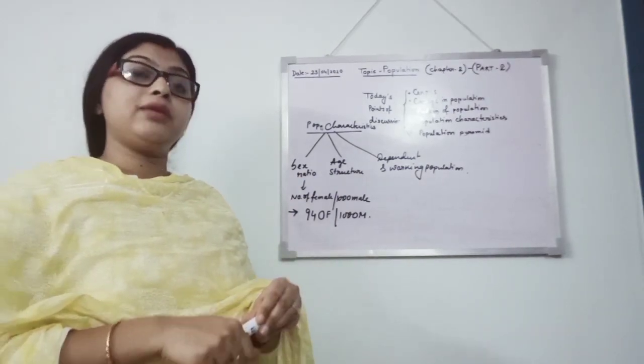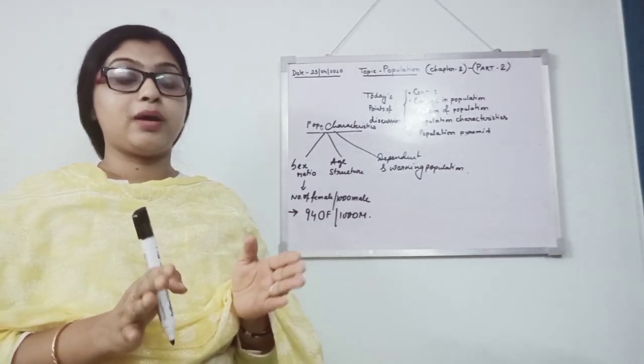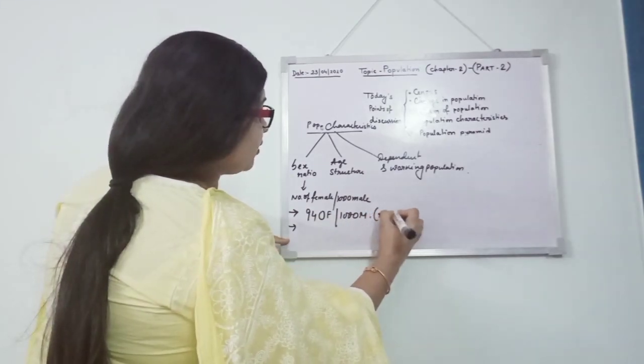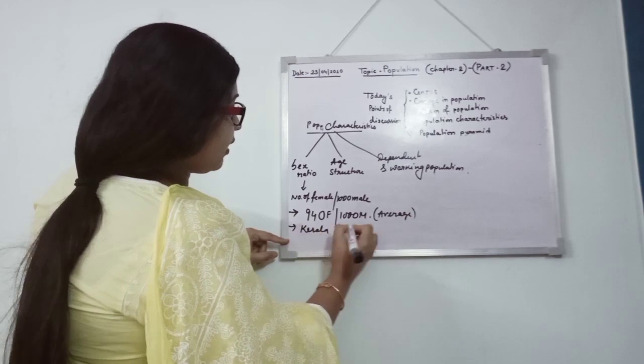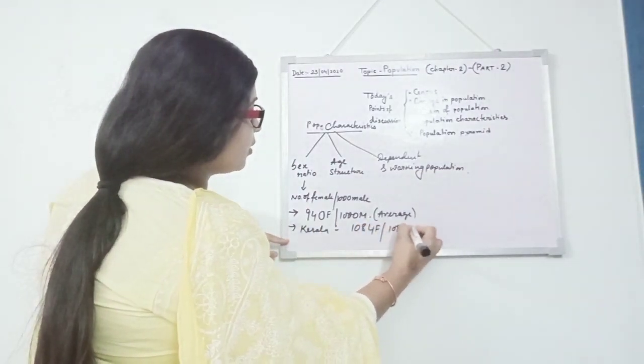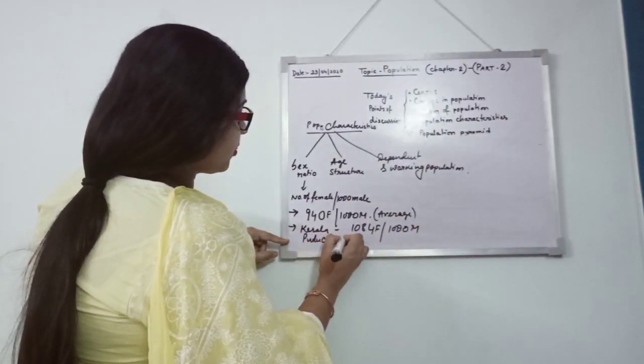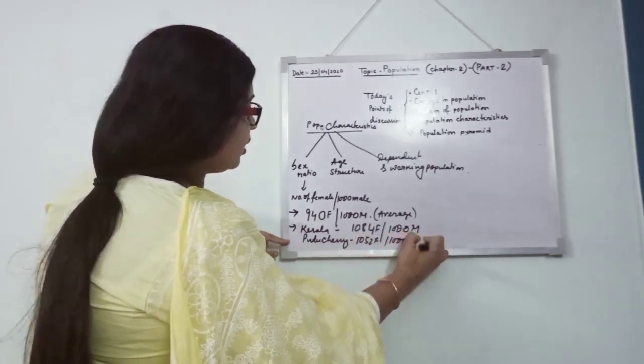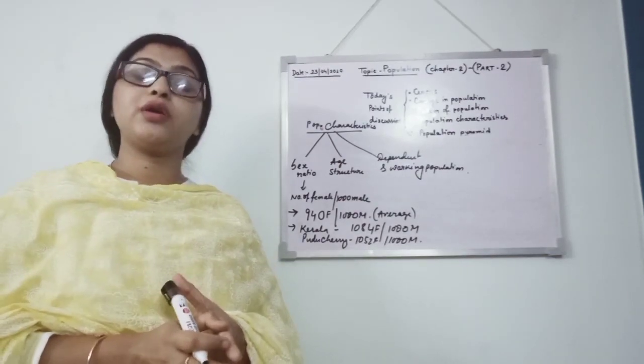But in some states, we will get to see this sex ratio is having very good scenario. State like Kerala, having 1084 females per thousand males. Puducherry, having 1052 females per thousand males. And some northeastern states are also having good scenario.